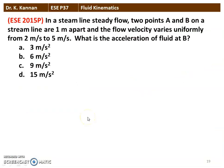The first question is from the 2015 question paper. In a streamline, steady flow, two points A and B on the streamline are 1 meter apart and the flow velocity varies uniformly from 2 meters per second to 5 meters per second. What is the acceleration of the fluid at B? The correct answer is 15 meters per second square.